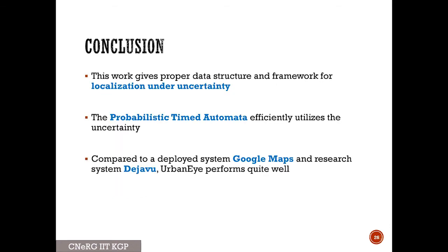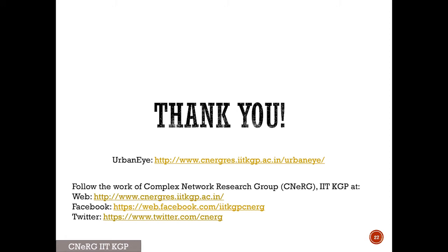To summarize this work: we developed a framework where we can localize in the face of uncertainty, where you have this kind of volatility for bus stops. We propose this PTA and show that the system works pretty well against Google Maps and Deja Vu. That's all — I'll take a few questions.